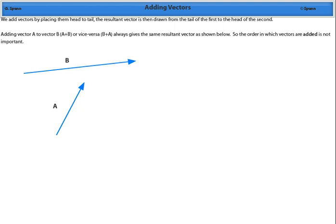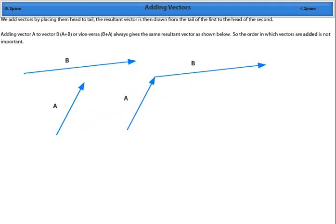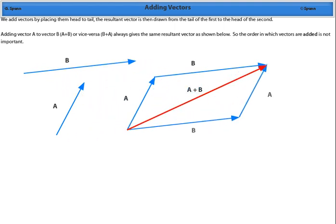To add vectors, we place them head to tail and draw the resultant from the tail of the first vector to the head of the second vector. Note that the order of addition does not matter.